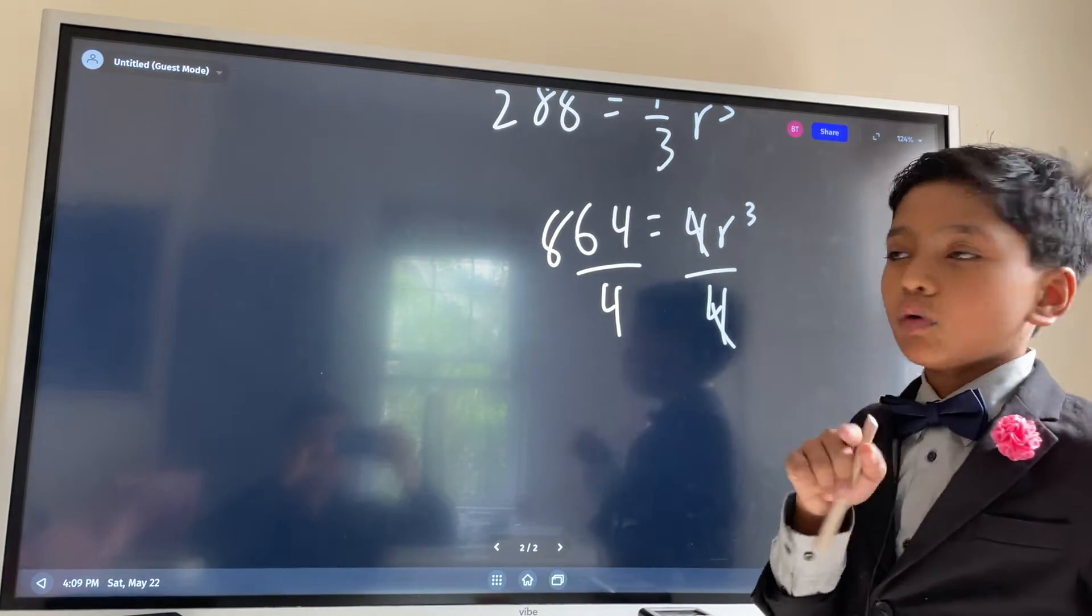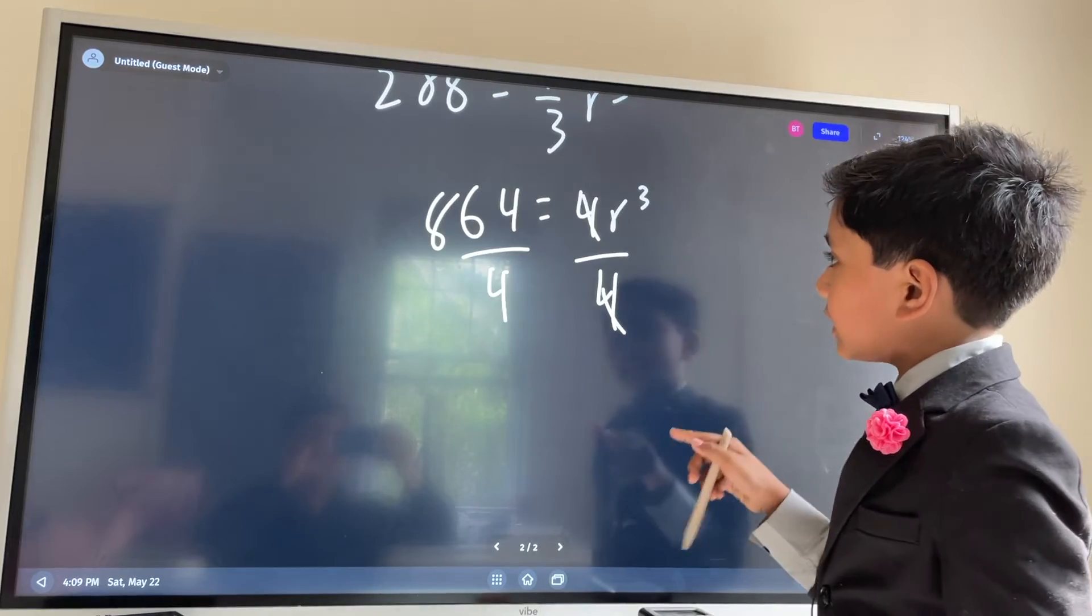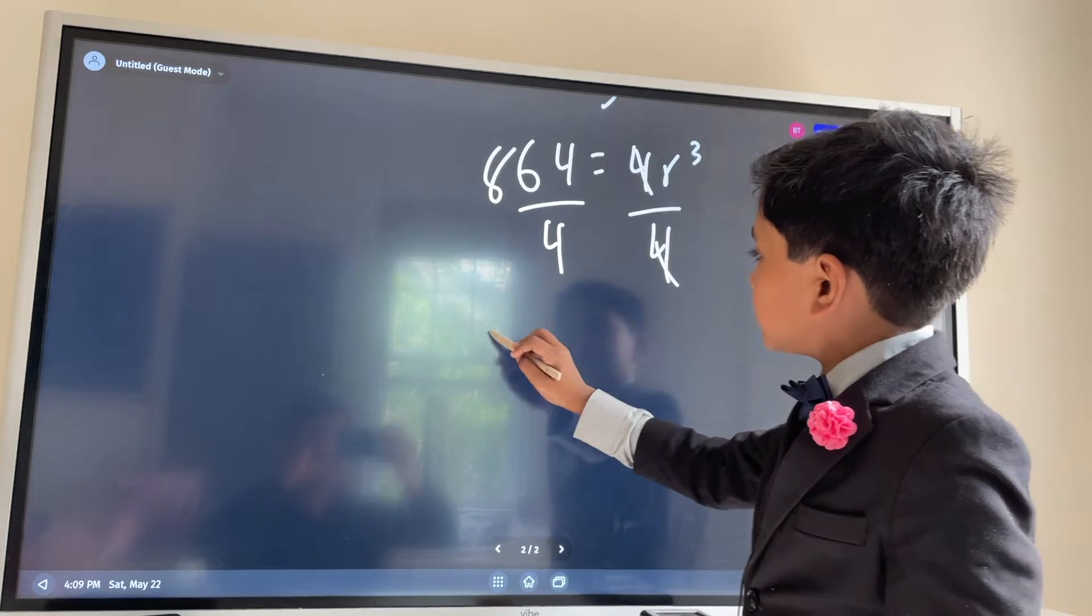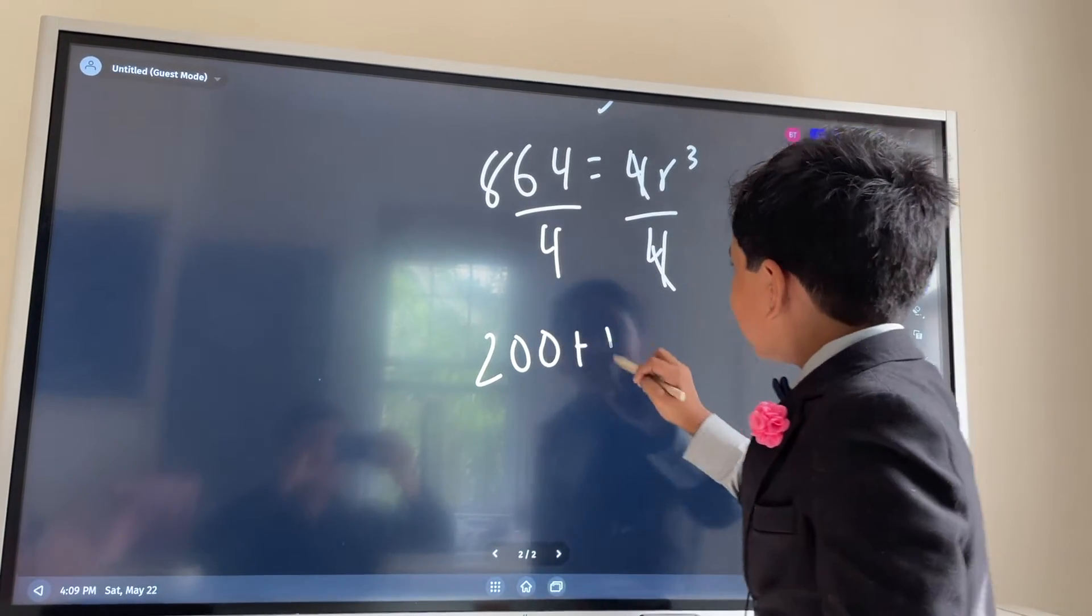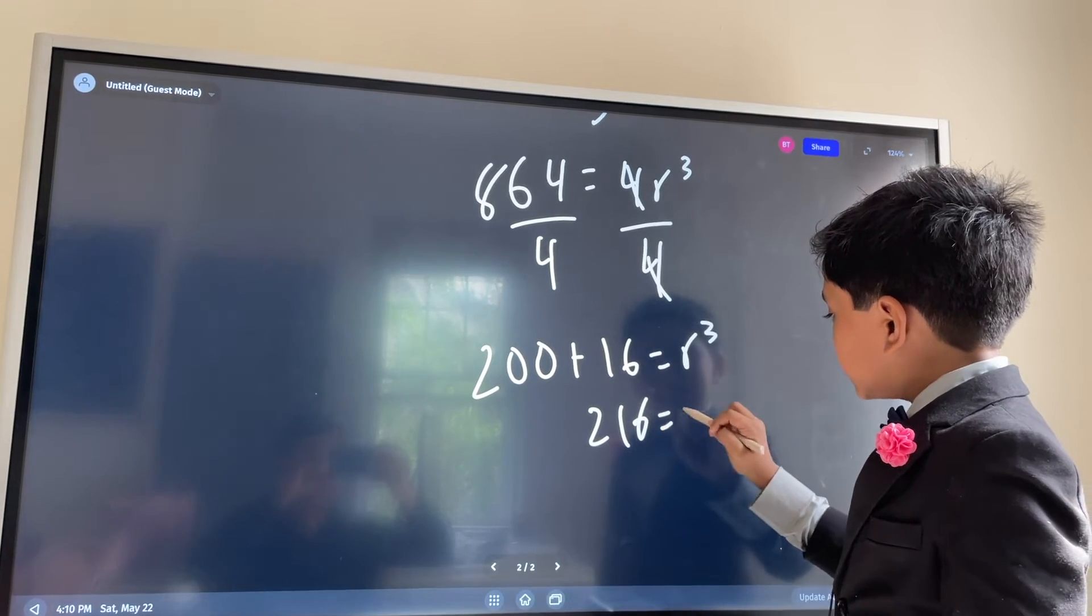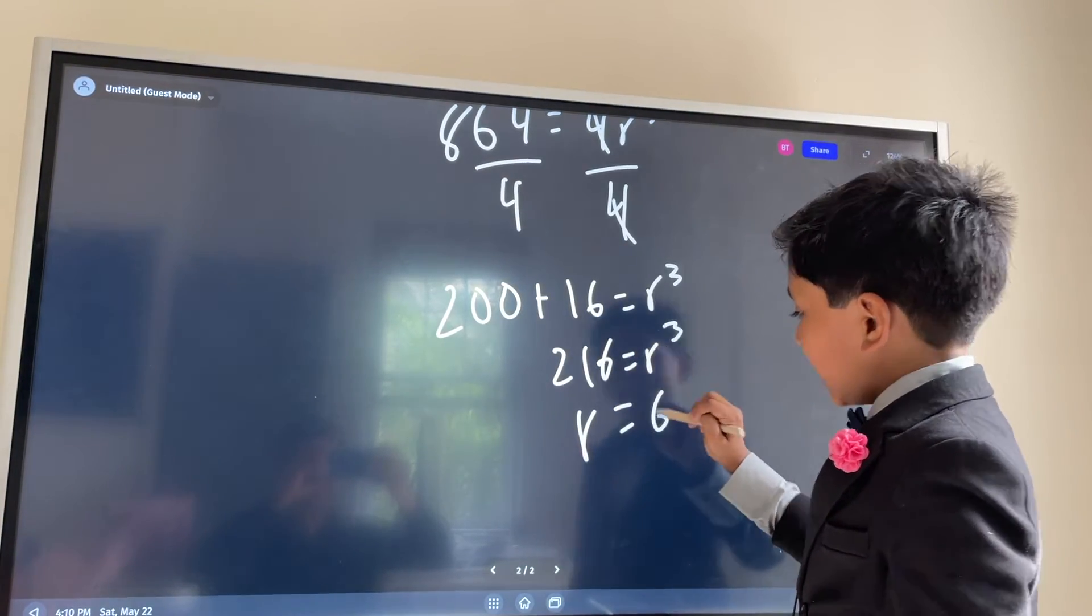So we can split this into multiple parts: 800 over 4 plus 64 over 4. And that just gives us 200 plus 16 equals r cubed, which means 216 is r cubed, meaning our radius is 6.